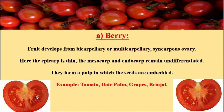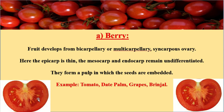In some tomato fruits, you can find a tricarpellary ovary also. Syncarpous is a condition in which the carpel number is more than one and those carpels are fused together. You can find the two carpel regions fused, so this condition is referred to as a syncarpous ovary. The epicarp is thin, and the mesocarp and endocarp are undifferentiated and form the pulpy region in which the seed is embedded.